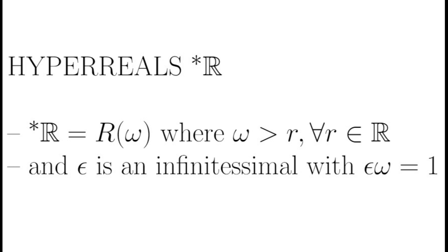The hyperreals, denoted star R, form a field extension of the reals with a number omega adjoined. Now omega is a transfinite number, which is a number larger than any finite number, and its reciprocal epsilon is an infinitesimal, which is smaller than any positive real number. And also note that omega times epsilon is equal to one.